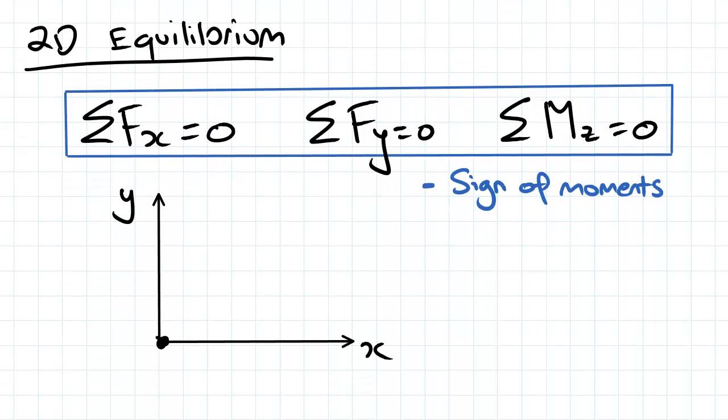2D equilibrium is defined by three equations: sum of the forces in the x direction equals zero, sum of the forces in the y direction equals zero, and the sum of the moments in the z direction equals zero.